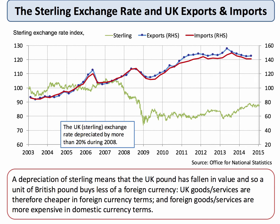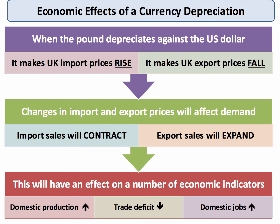You can see this happening if you follow the green line on this chart — sterling depreciated by more than 20% during 2008. What that means is that one pound buys less of a foreign currency. The consequence is that UK goods and services being sold overseas will be cheaper when priced in foreign currencies, and foreign goods and services — in other words imports — would be more expensive when priced in domestic currency terms. So when the pound depreciates against the US dollar or the euro, it makes the price of UK imports from those countries go up and it makes the price of our exports overseas go down.